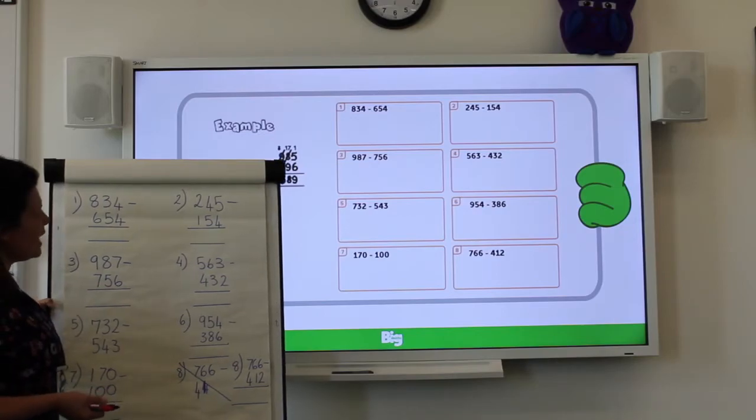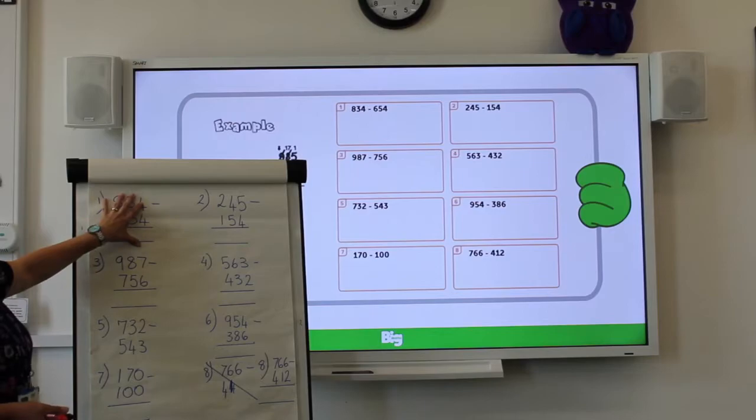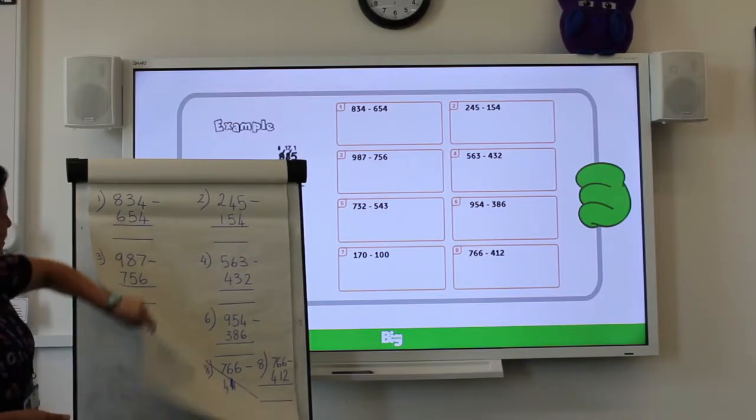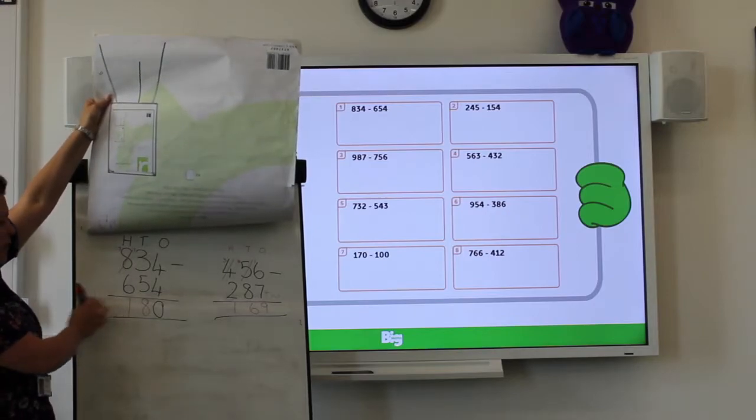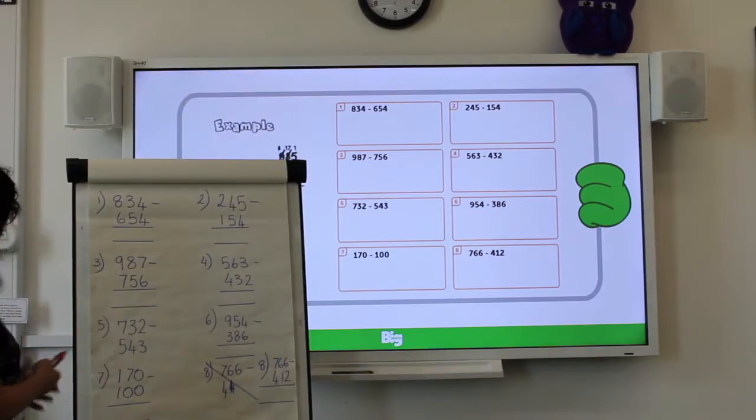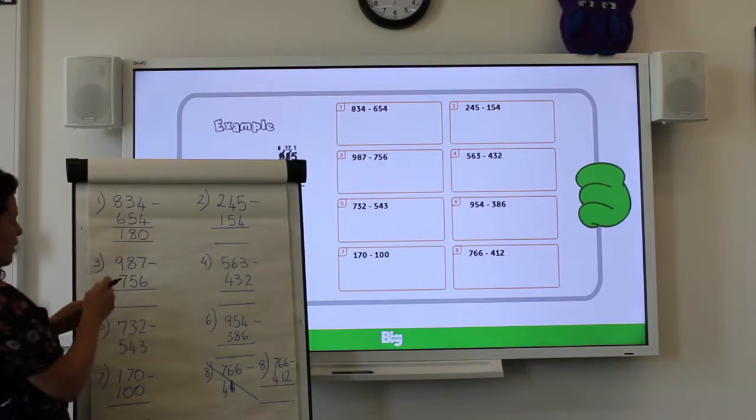Well done. So let's have a look together. I'm not going to work that first one out because that's the example I took from the whiteboard. So if you've got 180 there, you are right. Well done. That's the answer there. Let's have a look at number 2.